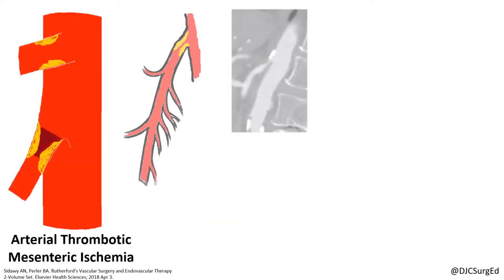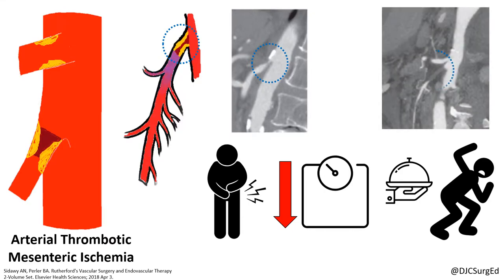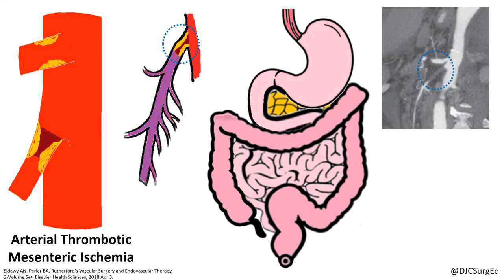The second most common cause is acute arterial thrombosis superimposed on pre-existing atherosclerotic disease. These patients are symptomatic of chronic mesenteric ischemia prior to the event, including a history of postprandial abdominal pain, weight loss, and food intolerance or fear. The SMA is involved from its origin and ischemia is more confluent.